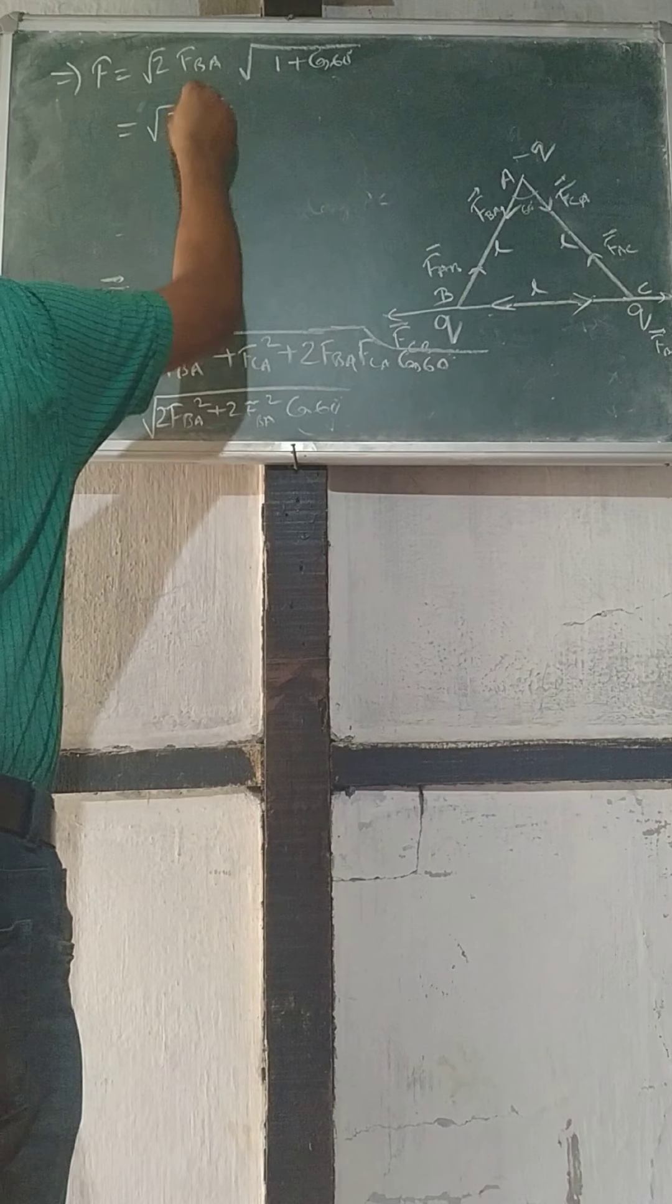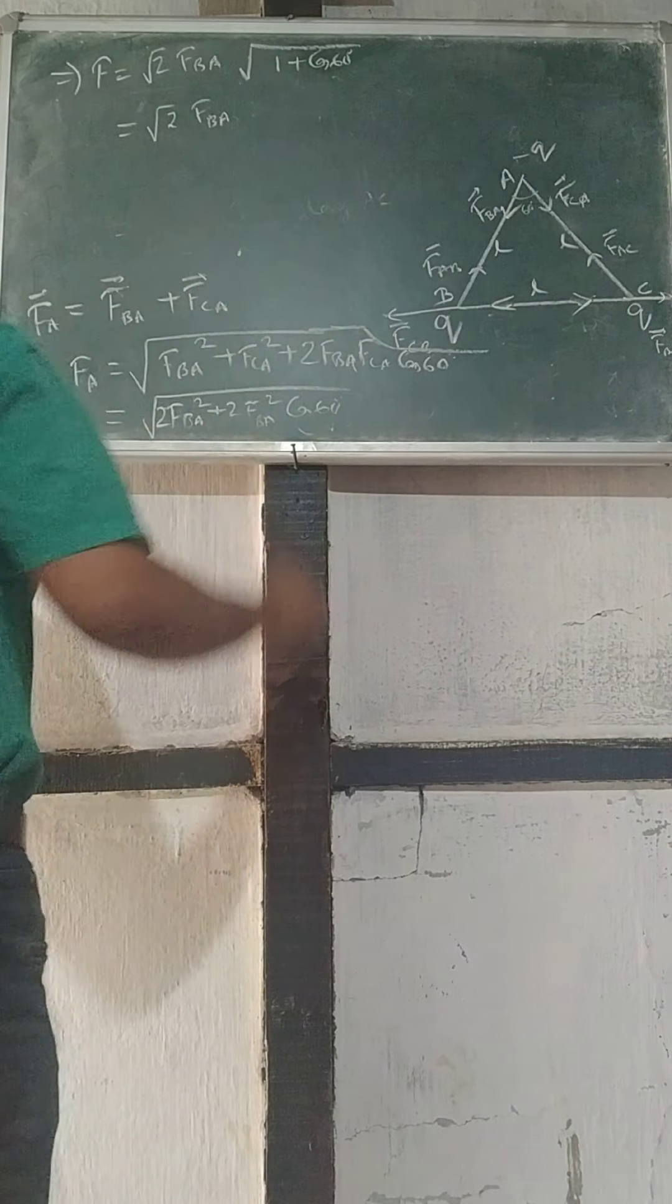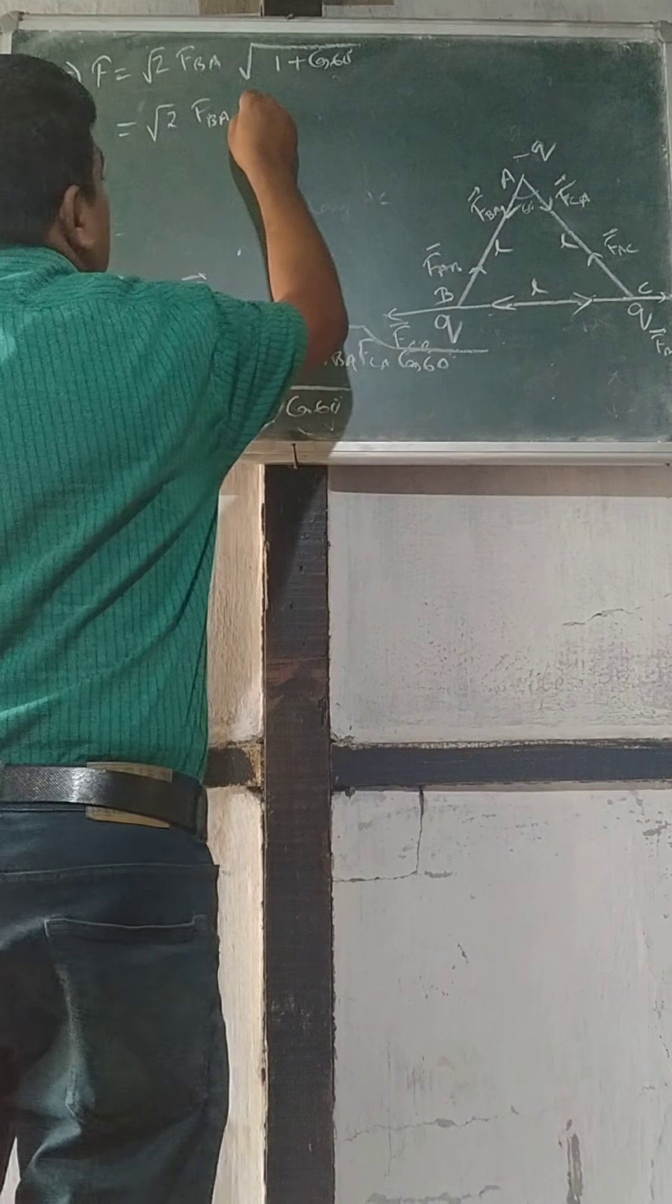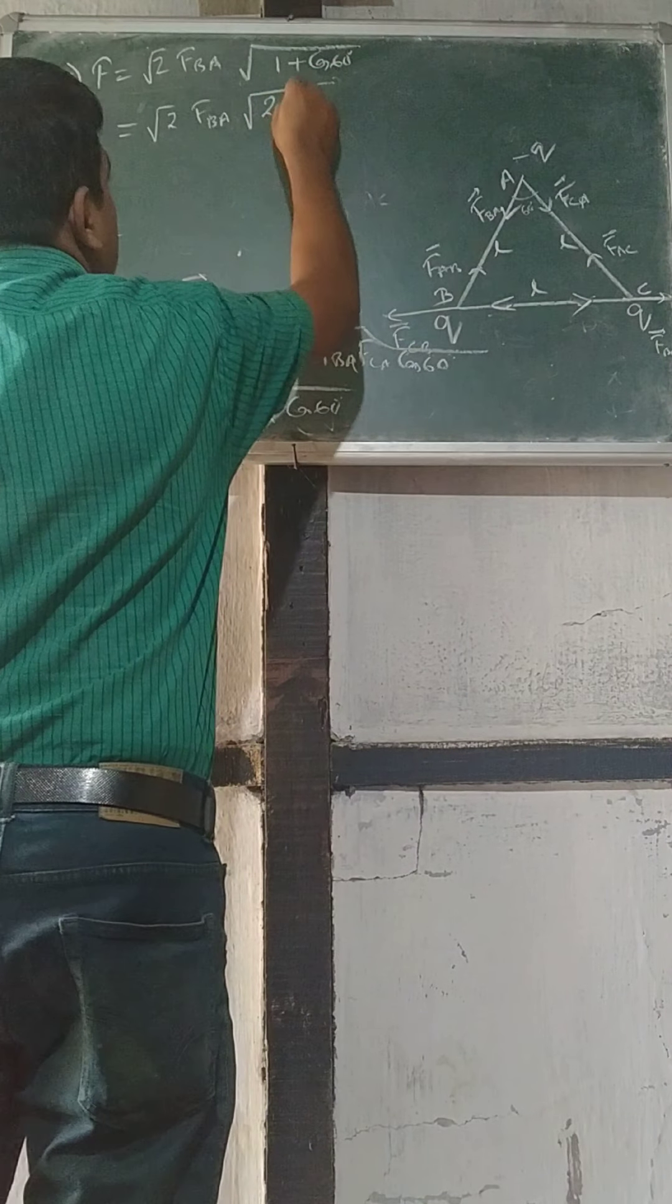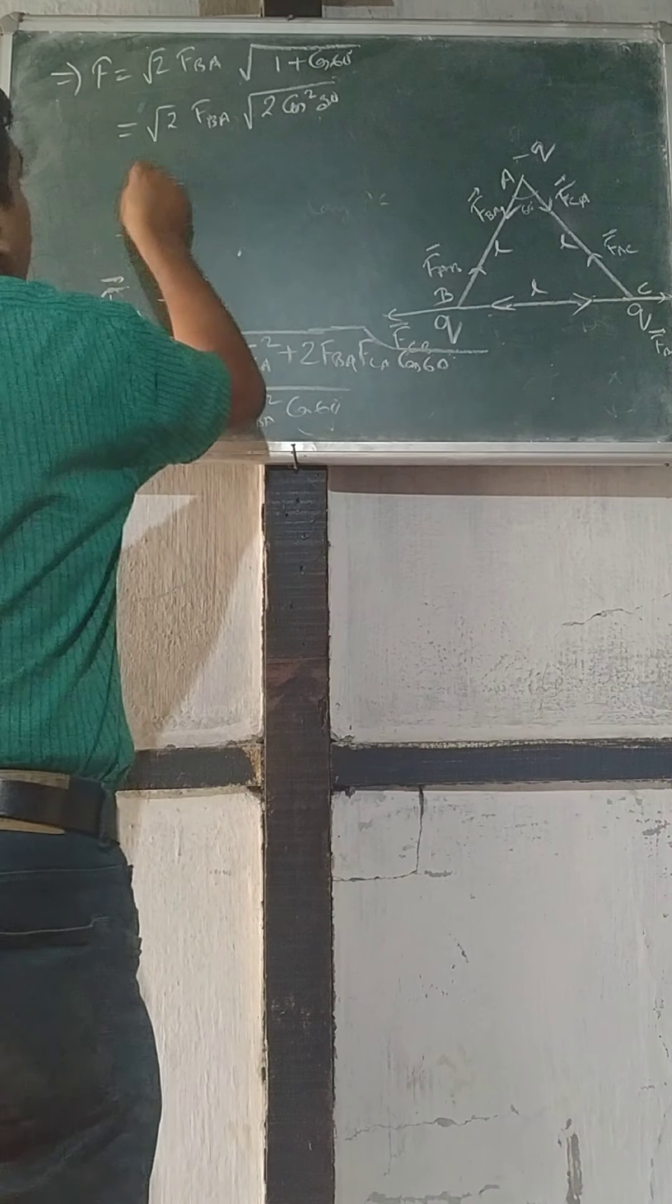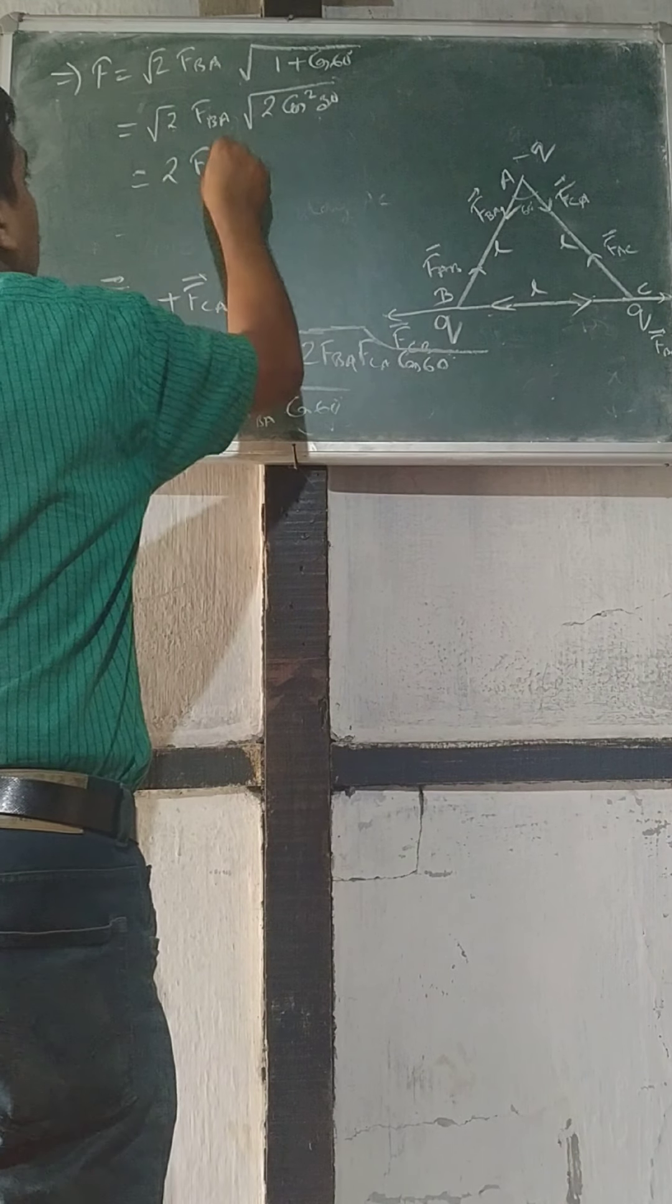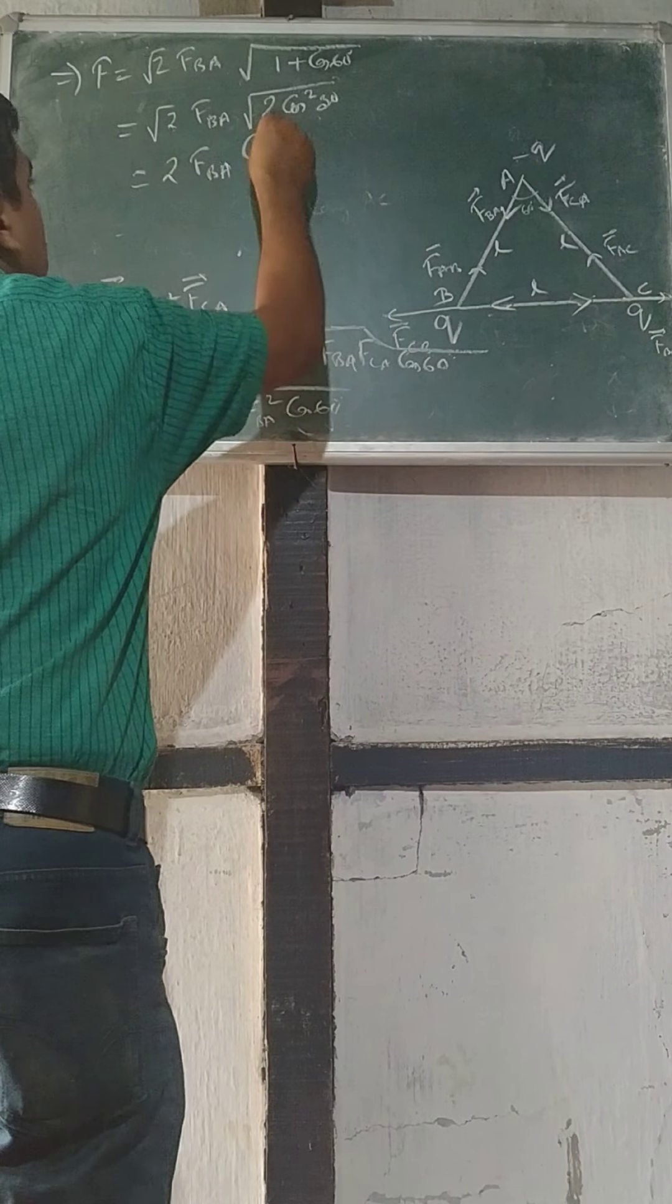In this, 2 FBA square root of FBA square. So root 2 FBA. We can use FBA square, so root of 1 plus cos becomes root 2 FBA cos 30.